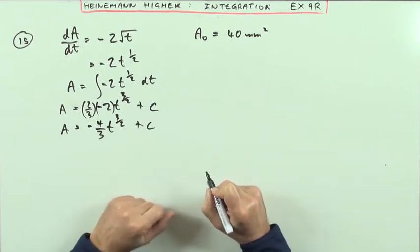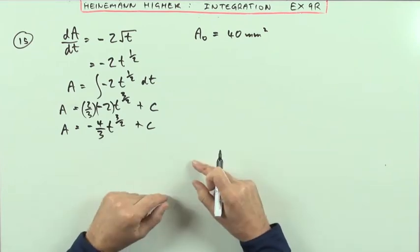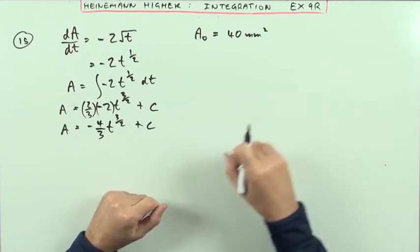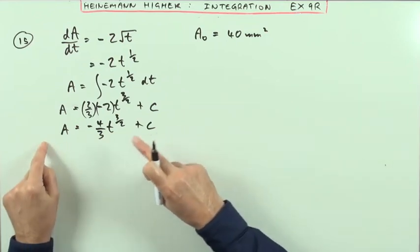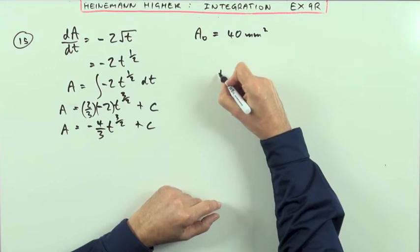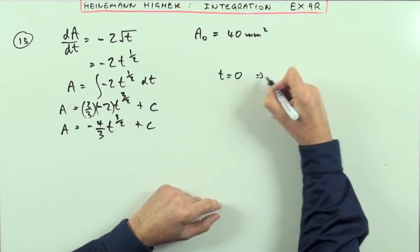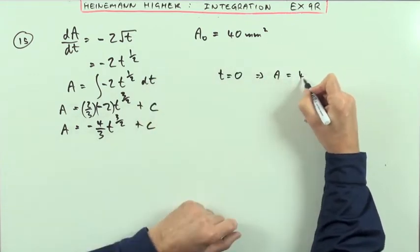How can I find that C? I'll need some initial values to put in. If it was a graph, I'd want a coordinate of a point. If it's this, I need a pairing, I need a t and an A. Well, what I do know is that at t=0, that means A will be its initial value, 40.